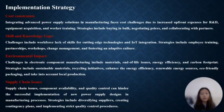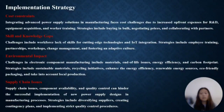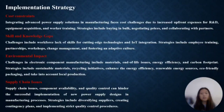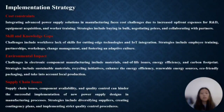Regarding environmental impact: challenges in electronic component manufacturing include materials, end-of-life issues, energy efficiency, and carbon footprint. Strategies include using sustainable materials, recycling initiatives, enhanced energy efficiency, renewable energy sources, eco-friendly packaging, and local production. Regarding supply chain issues: component availability and quality control can hinder the successful implementation of new power supply designs in manufacturing processes. Strategies include diversifying suppliers, creating contingency plans, and implementing strict quality control procedures.